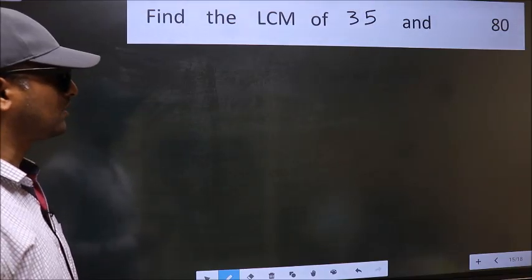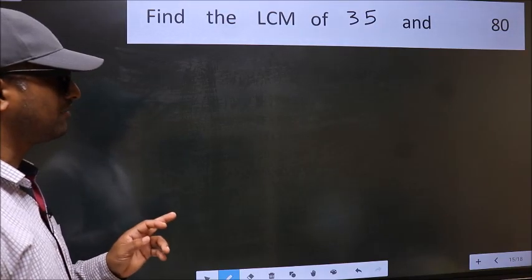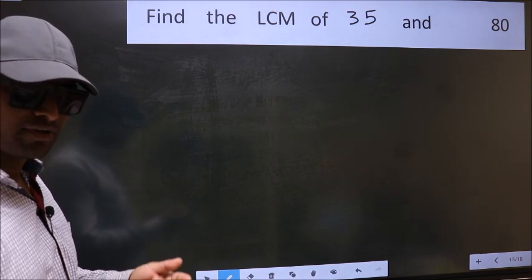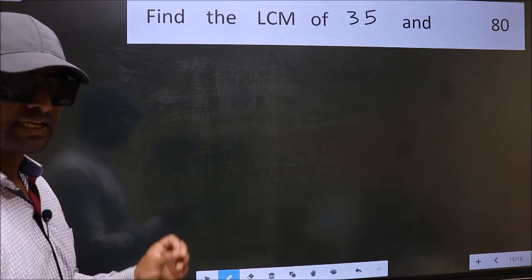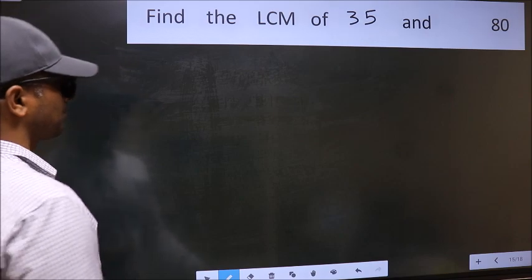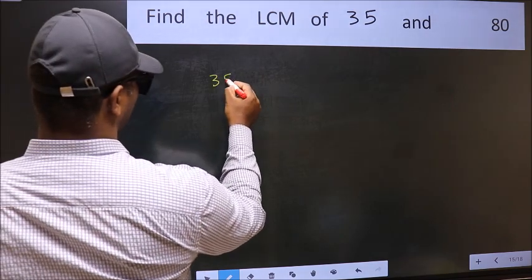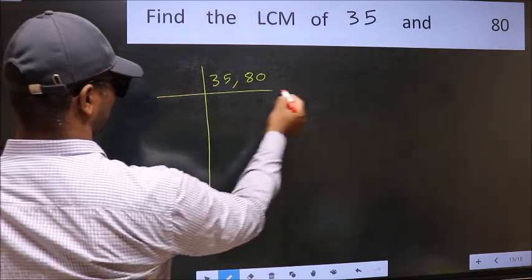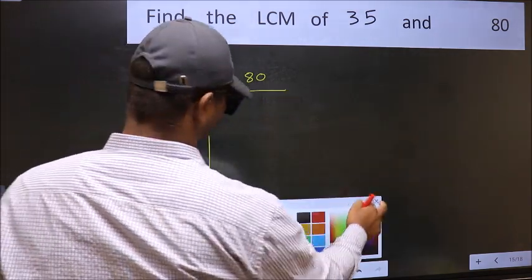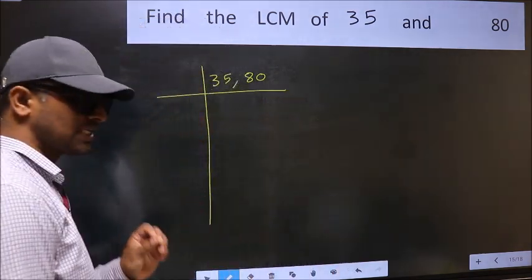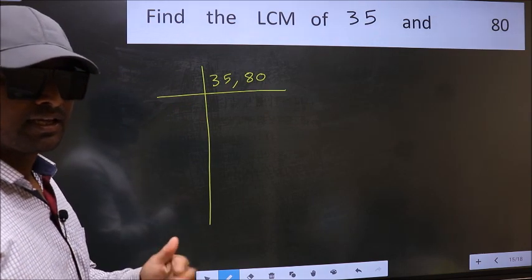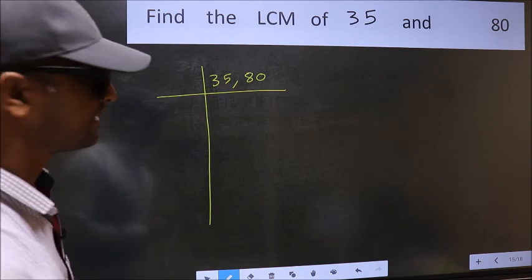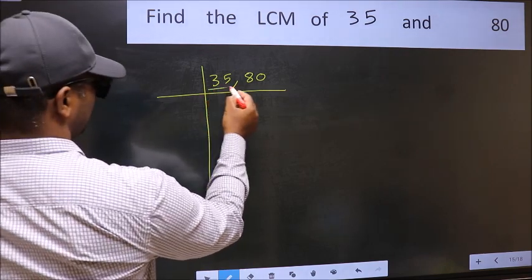Find the LCM of 35 and 80. To find the LCM, we should frame it in this way: 35 and 80. This is your step 1. Now you should focus on the first number, which is 35 here.